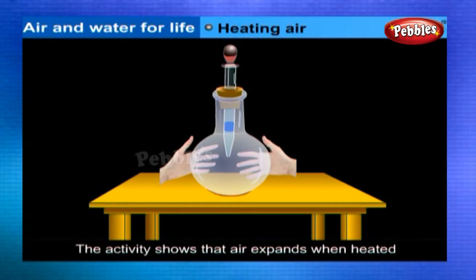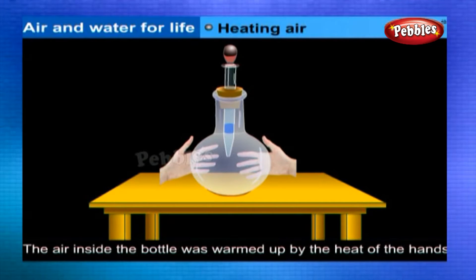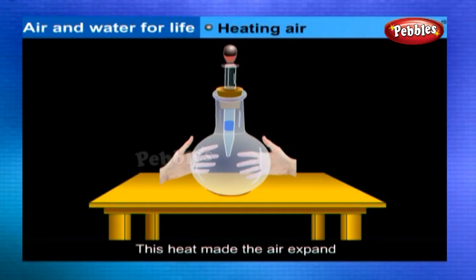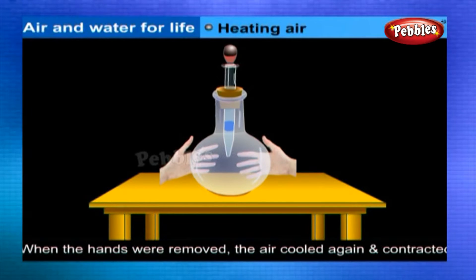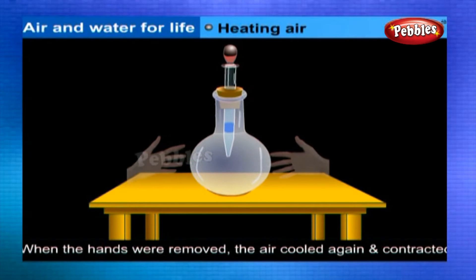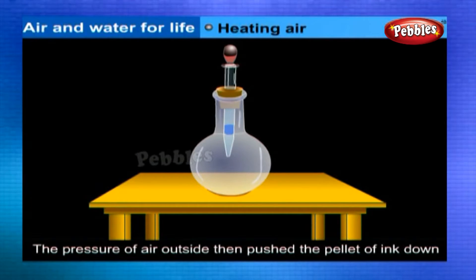After a while, watch the movement of the pellet of ink. The activity shows that air expands when heated. The air inside the bottle was warmed up by the heat of the hands, making the air expand and pushing the pellet of ink up. When the hands were removed, the air cooled and contracted, and the pressure of air outside then pushed the pellet of ink back.